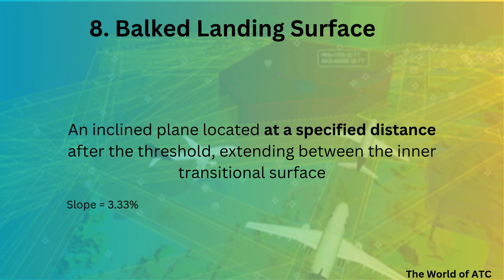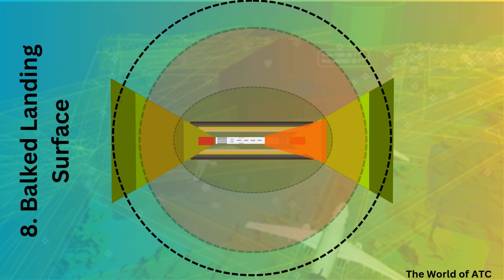The bulk landing surface itself is defined as an inclined plane located at a specified distance after the threshold, extending between the inner transitional surface. It is an inclined plane with a slope of 3.33%. Once the bulk landing surface is added into a diagram, the diagram would somehow look like this.